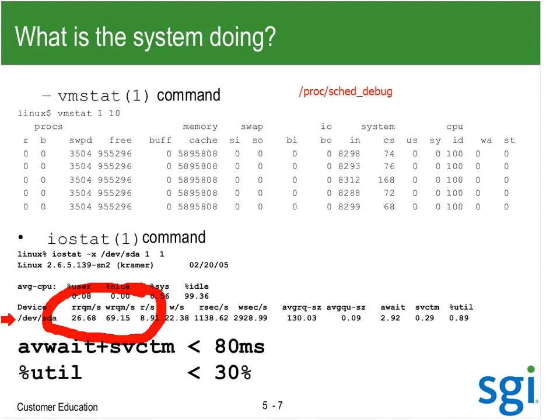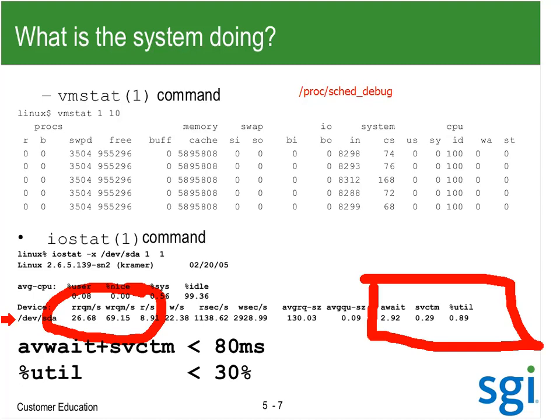The key statistics I like to see are the last three: I want the service time and the wait time to be less than 80 milliseconds — sometimes I say 60 milliseconds. And my percent utilization to be less than 30 percent busy.